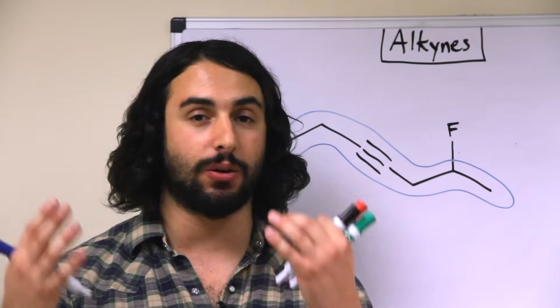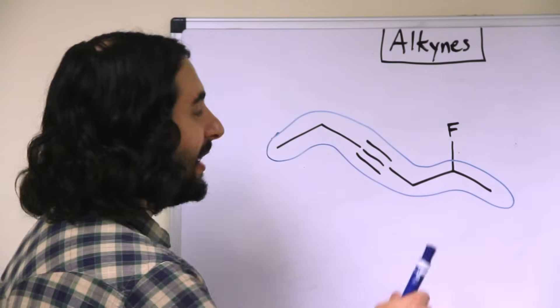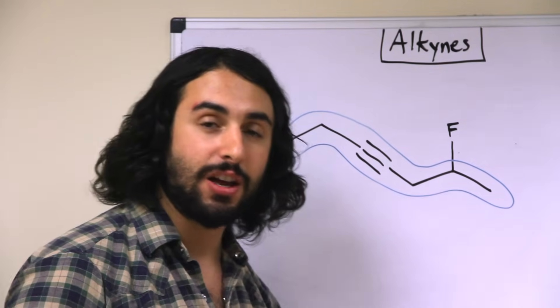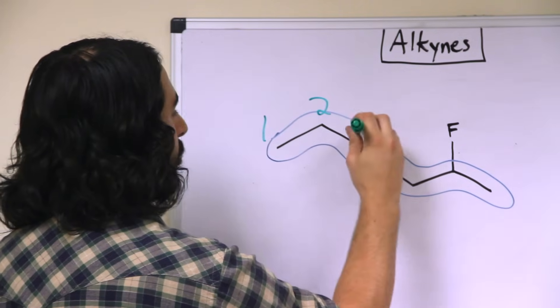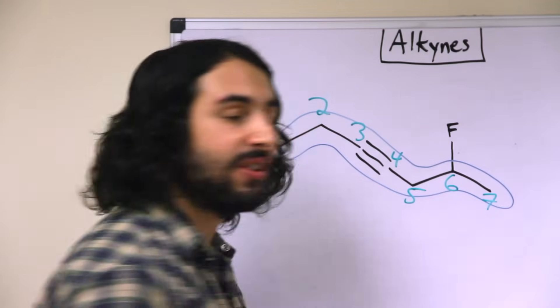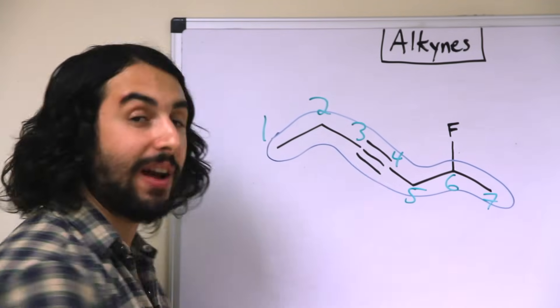So that means that even though a fluorine is on carbon-2 coming from the right side, we must number this from the left because that will give the triple bond occurring soonest. So we do have a seven carbon alkyne, once again bearing in mind that these are carbon atoms right there.